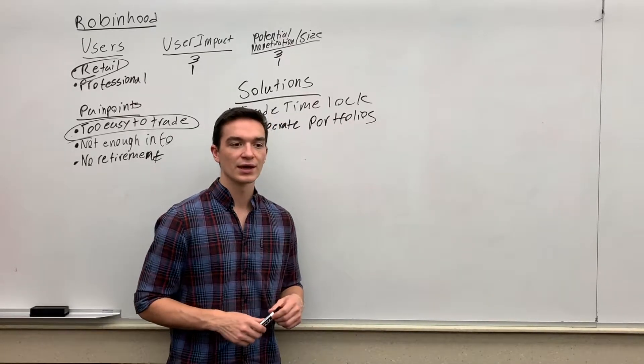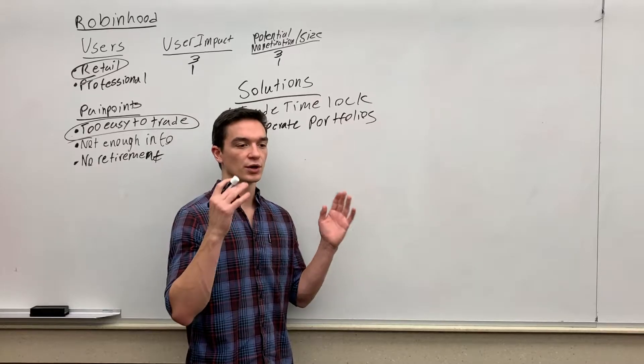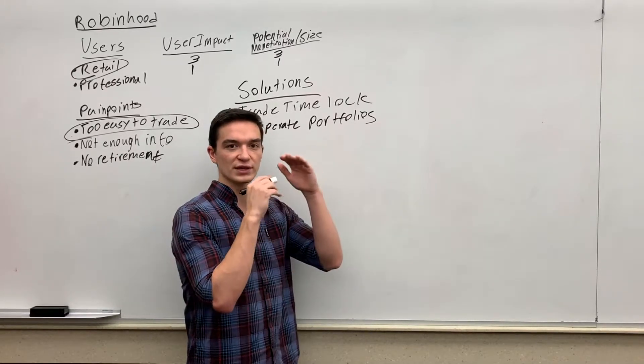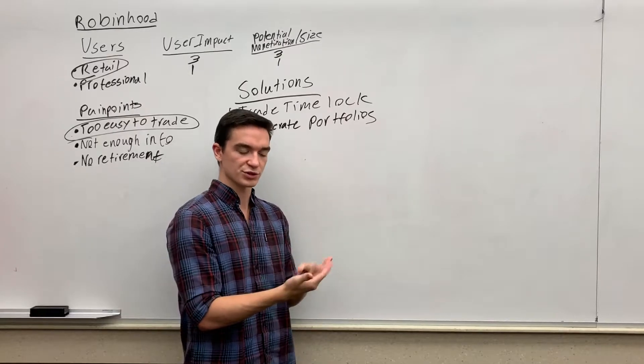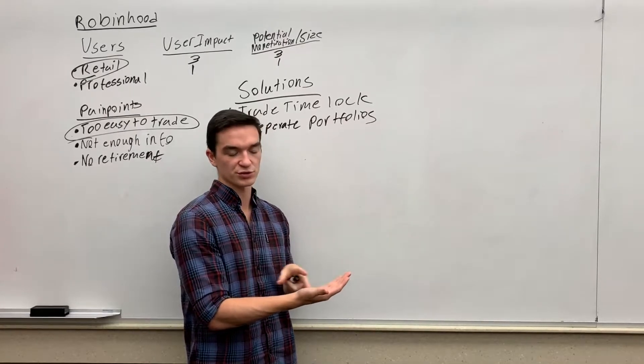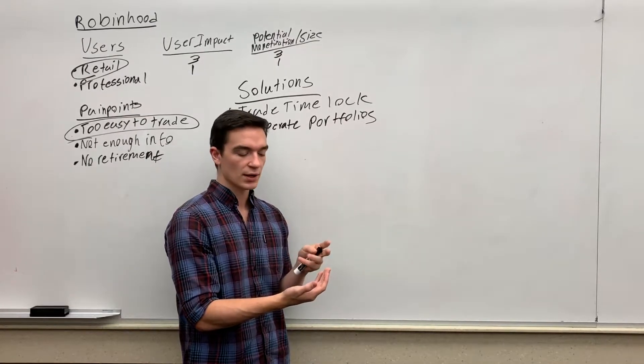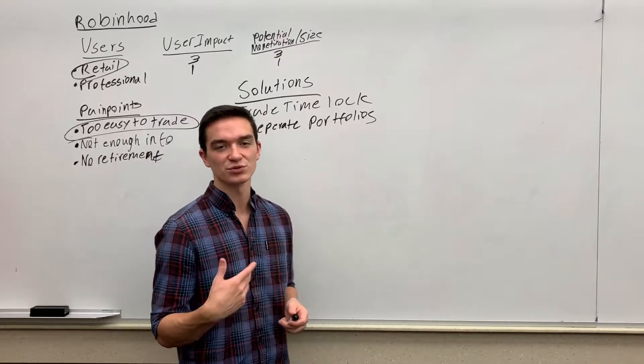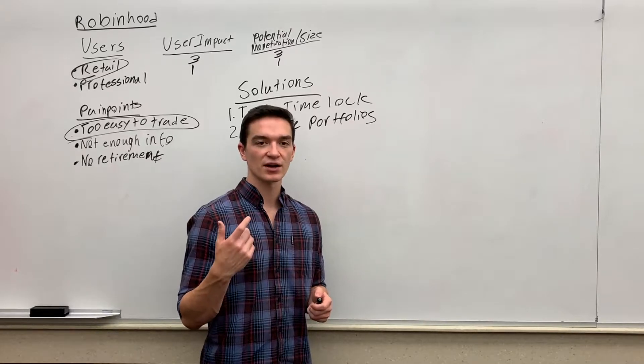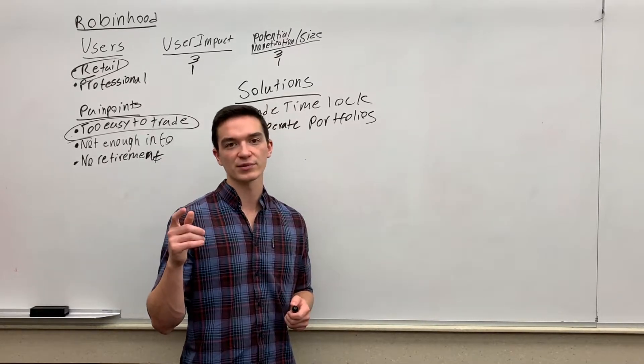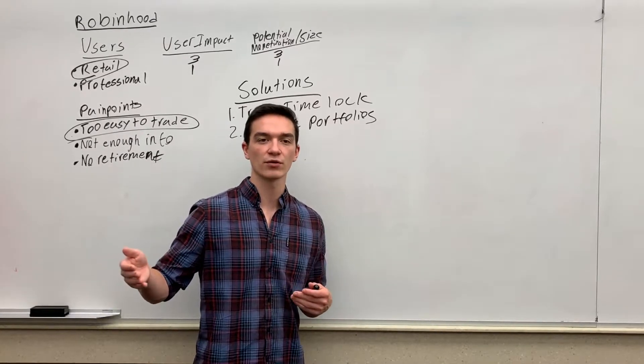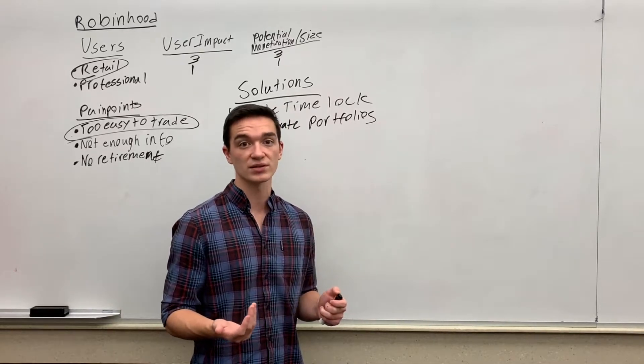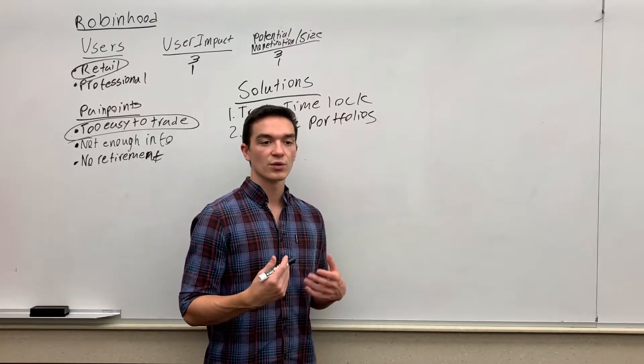When you open Robinhood, there's one screen that shows all the stocks you hold, shows the market value, shows how it does. What happens is people start checking that every day, and really with your long-term investments, you don't want to check that every day because the stock goes down 5% one day, up 5% the next. It all evens out in the long run, but if you're doing it every day, it drives you nuts.